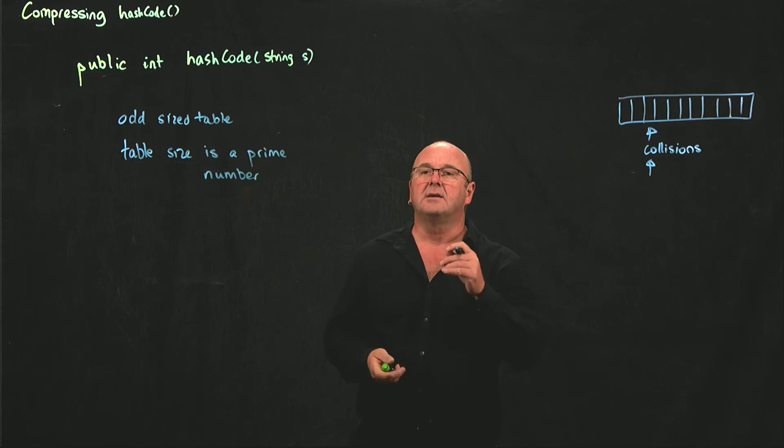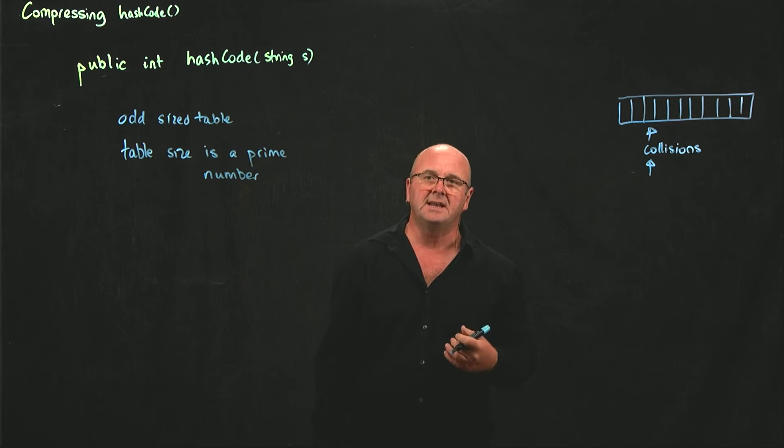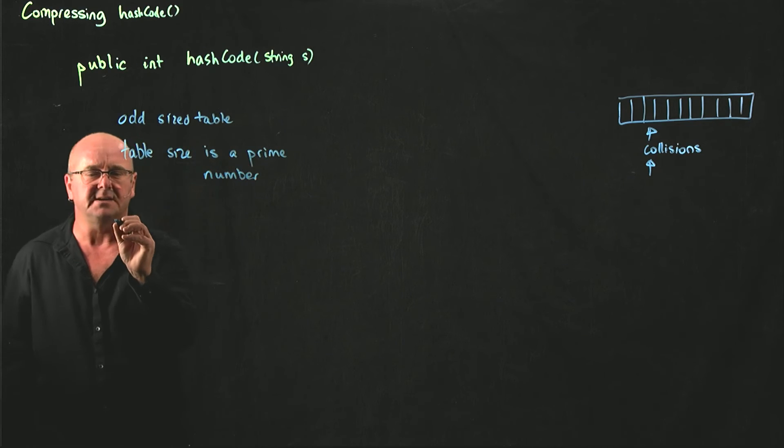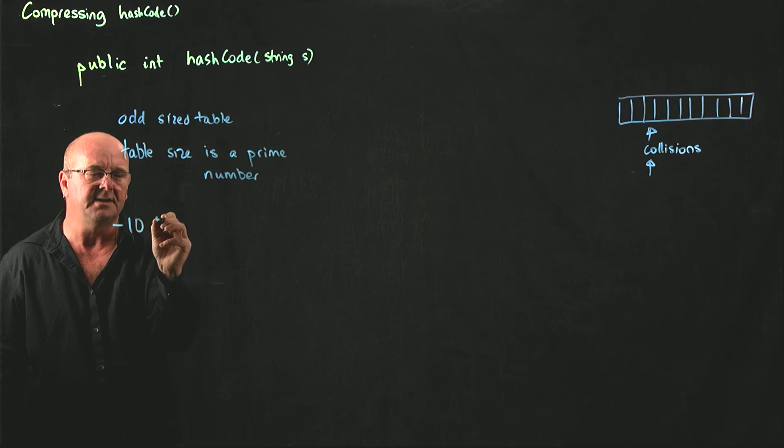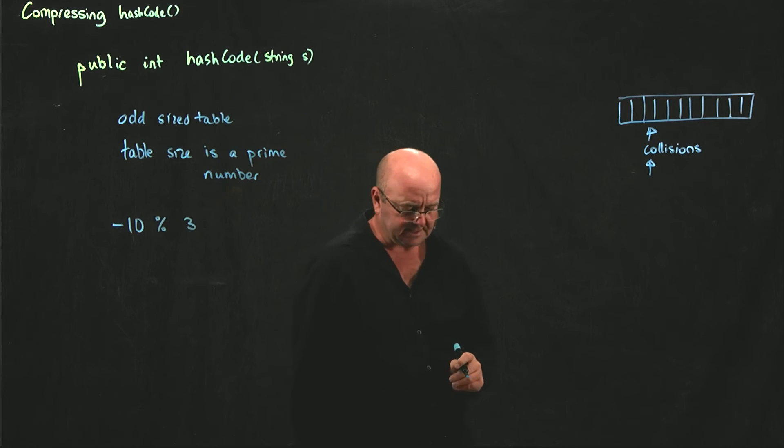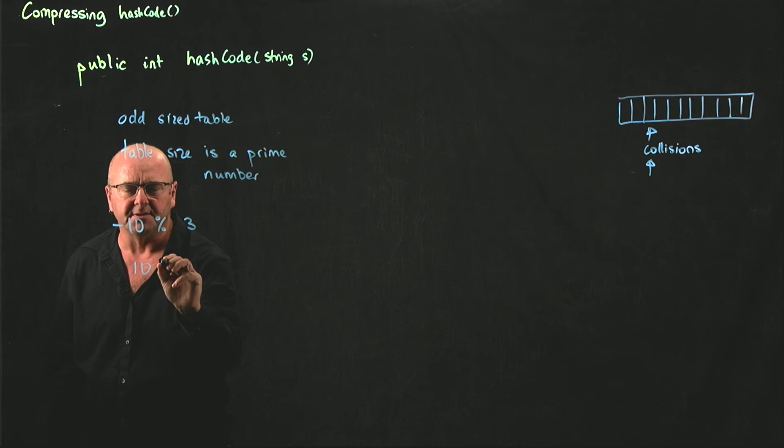Remember also that integers that can be returned from our hash code function can be negative. So what's the answer to this? Here's -10 modulo 3. What's the answer to that? What's the answer to 10 modulo 3?